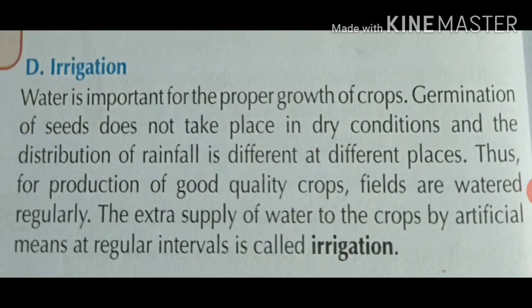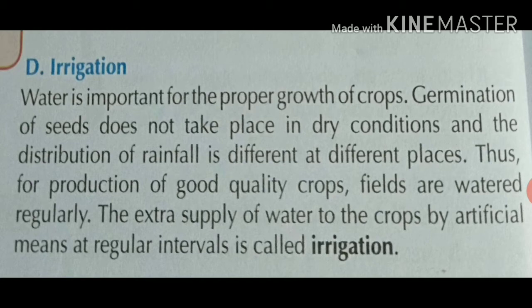Our next topic is irrigation. Irrigation means 'sichai' — watering the fields. Water is very important for the proper growth and development of crops. Germination of seeds does not take place in dry conditions. Germination means the growth of a seed into a crop plant. So in dry conditions, germination will not take place; seeds need water for germination.